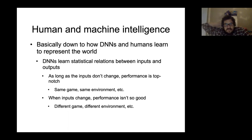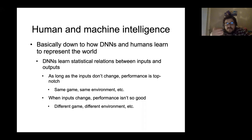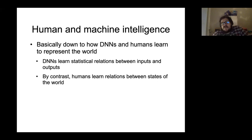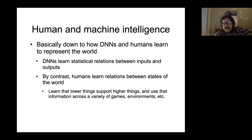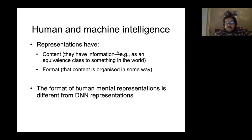Despite the messaging from proponents of deep networks who build lots of different models and call them all by the same name, really what they're doing is building a different model for every single task. By contrast, that's not how humans learn. Humans learn relations between states of the world, and we use these relations learned in some domains to solve problems in other domains — like learning a strategy in a video game and applying it to a different game, or even something like cooking.